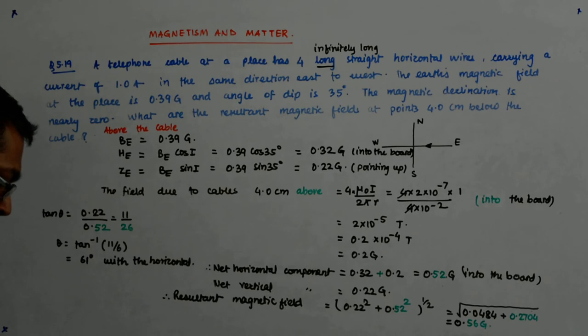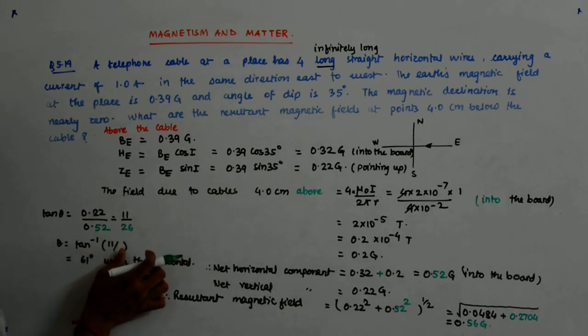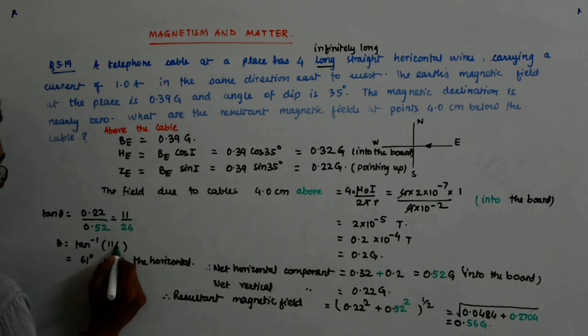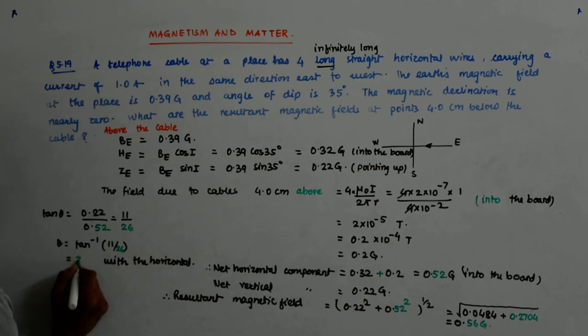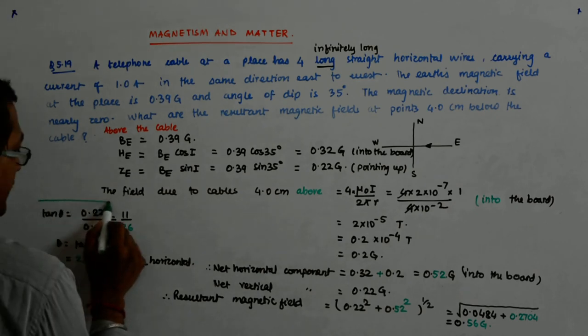So I will find tan inverse 11 divided by 26. So this is 11 upon 26 and that becomes 23 degrees with the horizontal. We get the point.